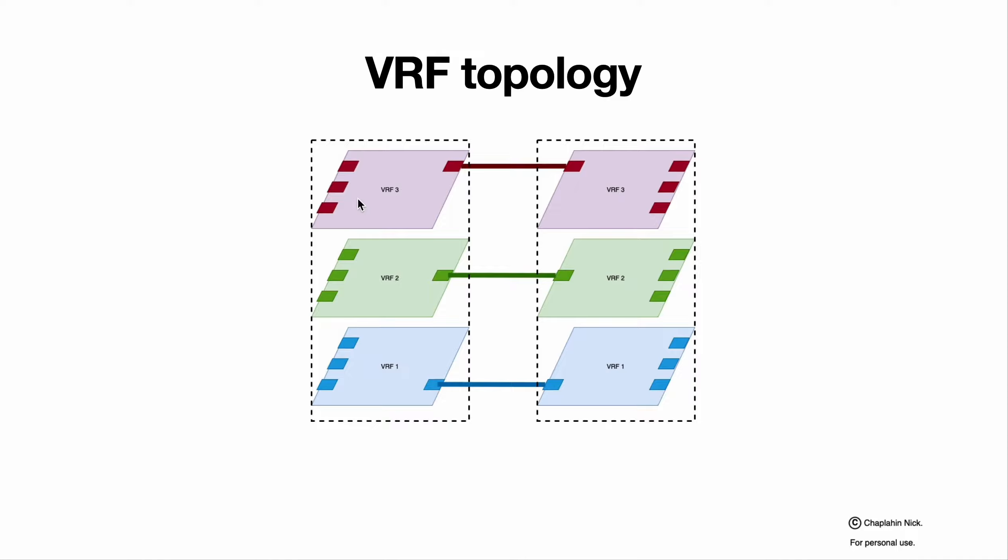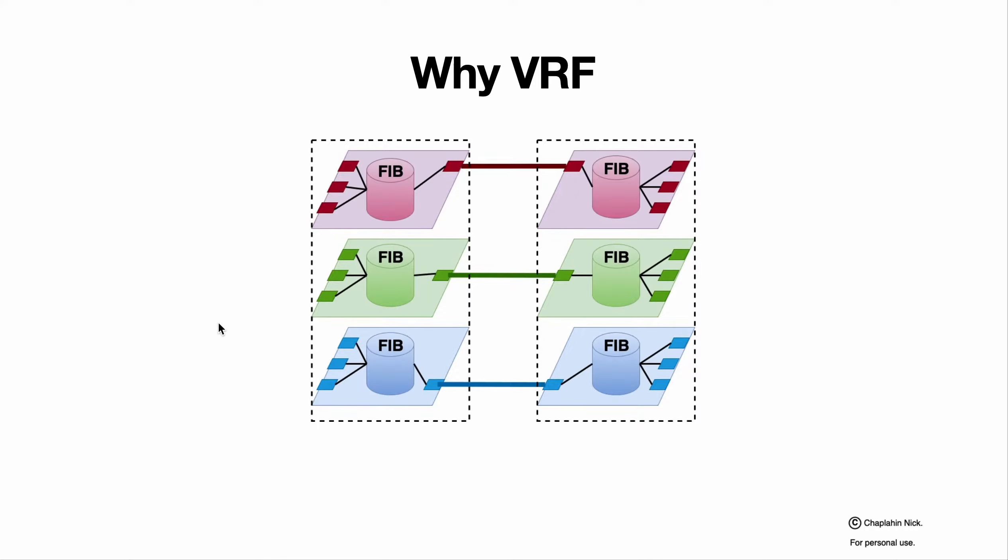VRF groups L3 interfaces through which traffic can run. And this is implemented by schematically having a routing table separately for each VRF. Physically, how it can be implemented depends on the vendor, but schematically each VRF has its own routing table.